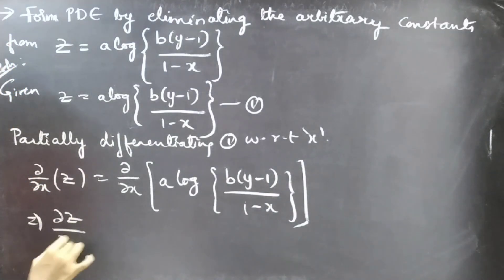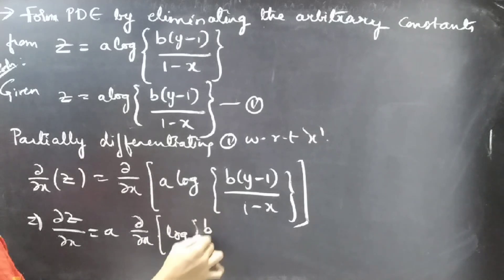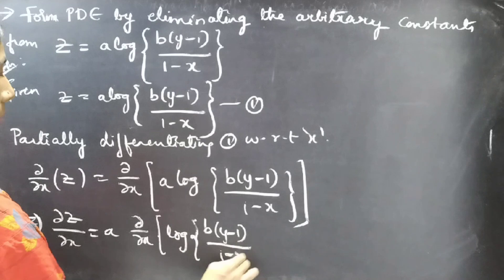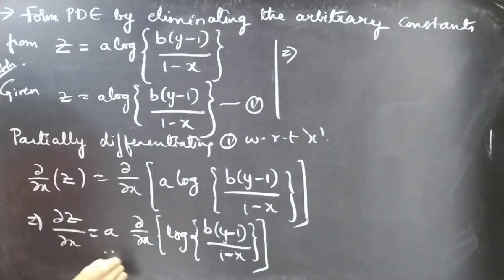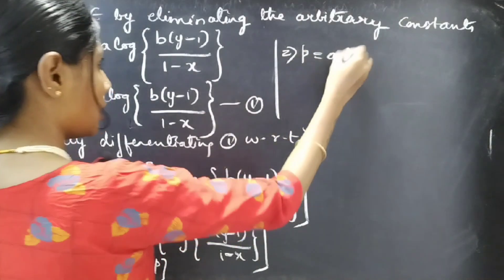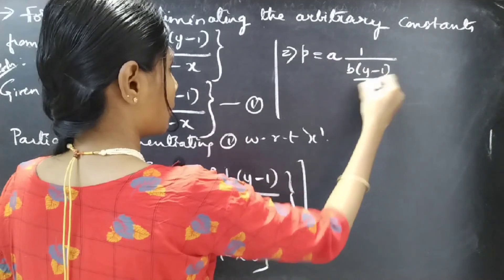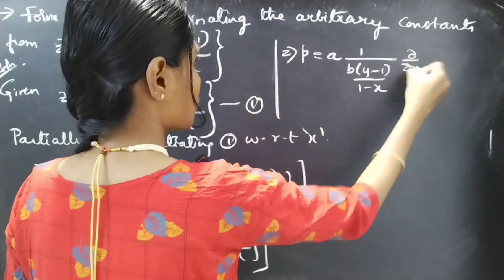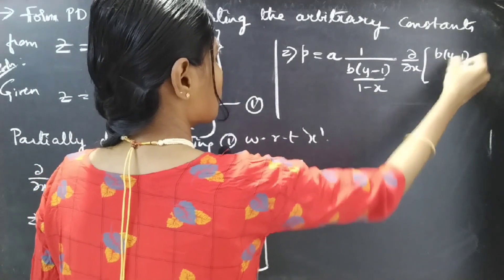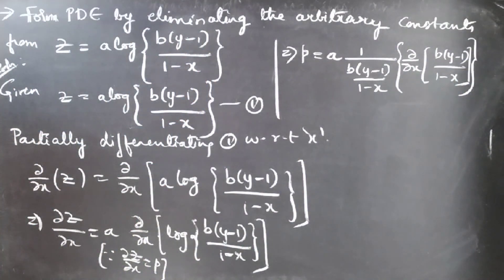Applying ∂/∂x on both sides of equation 1, we get ∂z/∂x = a into the partial derivative of log(b·y - 1/(1-x)). Using the notation ∂z/∂x = p, we replace the left-hand side by p. So p = a into (1/(b·y - 1/(1-x))) into the inner partial derivative with respect to x of (b·y - 1/(1-x)).